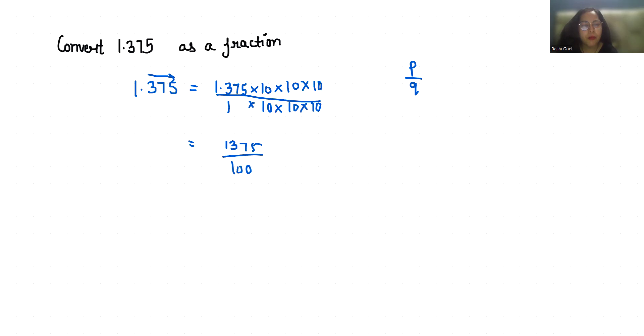Now it is in p by q form but we can reduce it more to convert to simplest form. So we will divide both numerator and denominator by 5. This gives us 275 by 200.